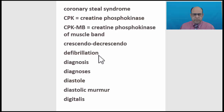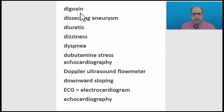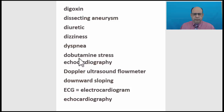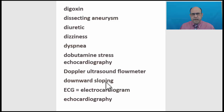Defibrillation. Diagnosis. Diastole. Diastolic murmur. Digitalis. Digoxin. Dissecting aneurysm. Diuretic. Dizziness. Dyspnea. Dobutamine stress echocardiography. Doppler ultrasound flow meter. Downward sloping — usually used for describing ST segment.